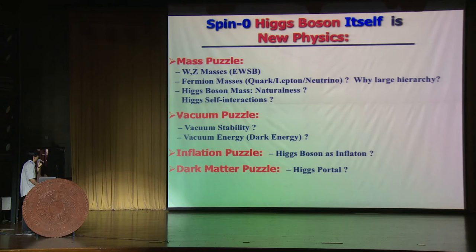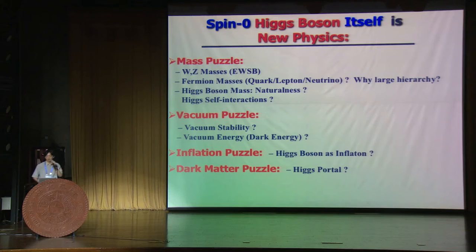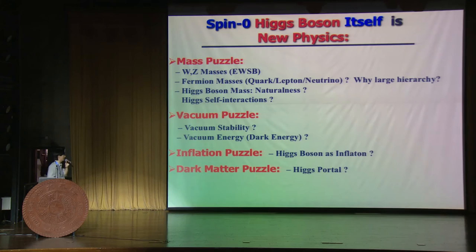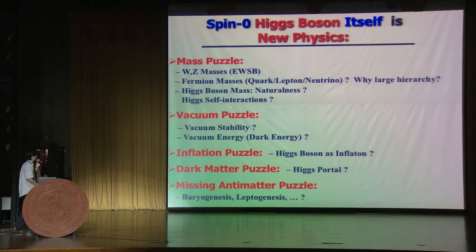Another important piece of evidence is the dark matter particle, which people have already stressed. The important connection to the Higgs is that the Higgs is a dimension-1 scalar field. The Higgs bilinear term H†H is dimension-2, which provides a natural Higgs portal to couple to additional new physics — like the dark matter particle χ, or to the graviton through the curvature tensor R. So a lot of exploration along that direction is well motivated.